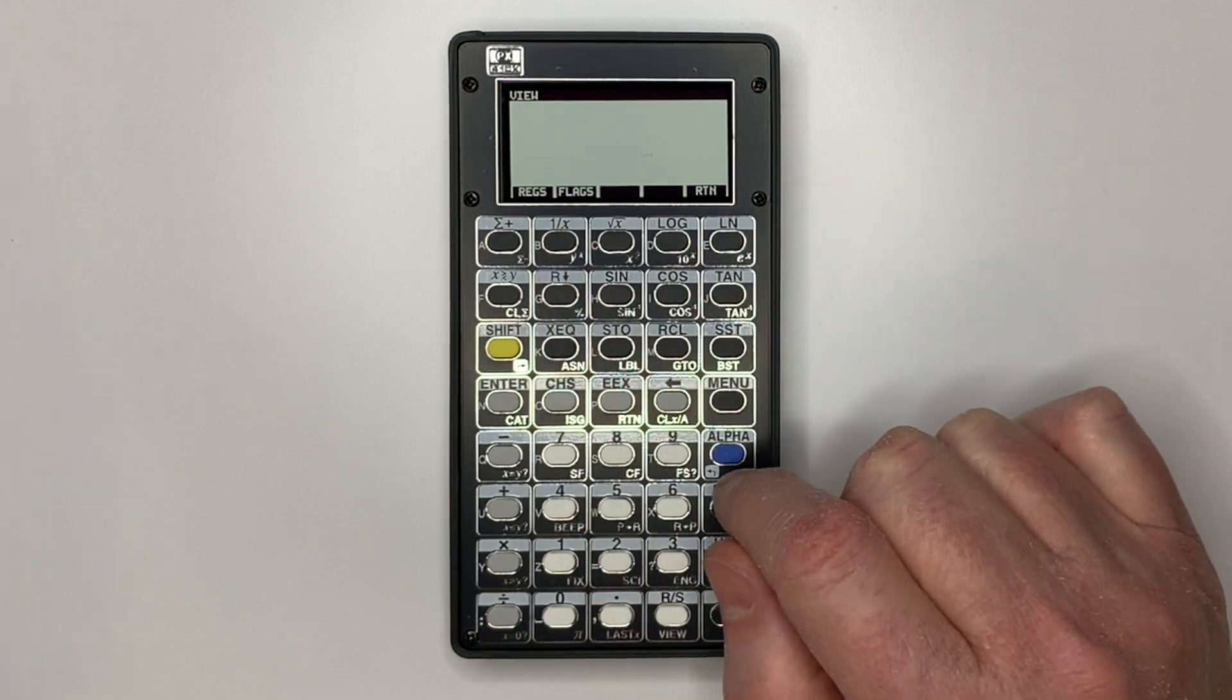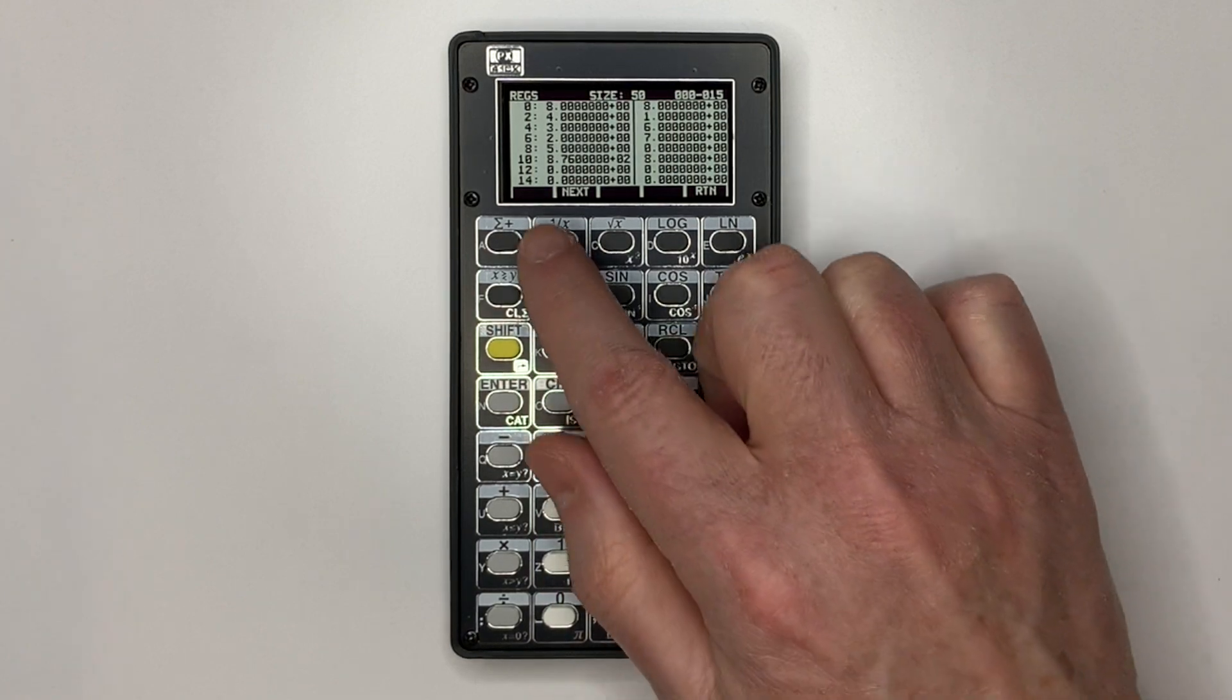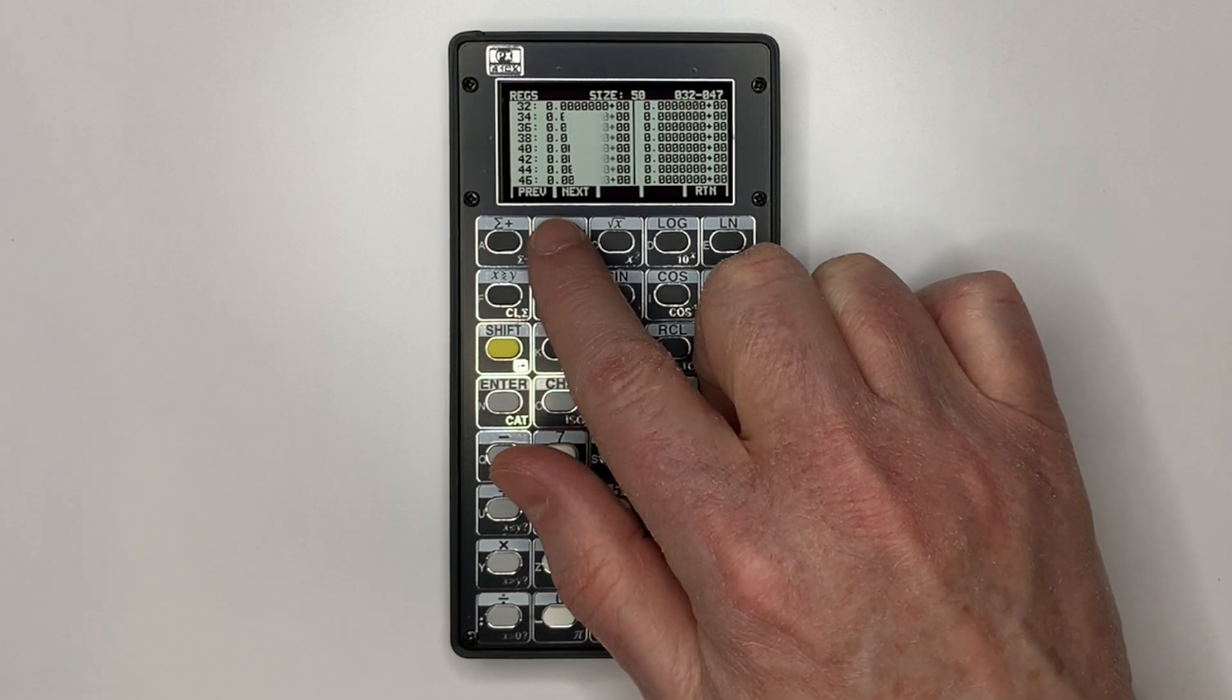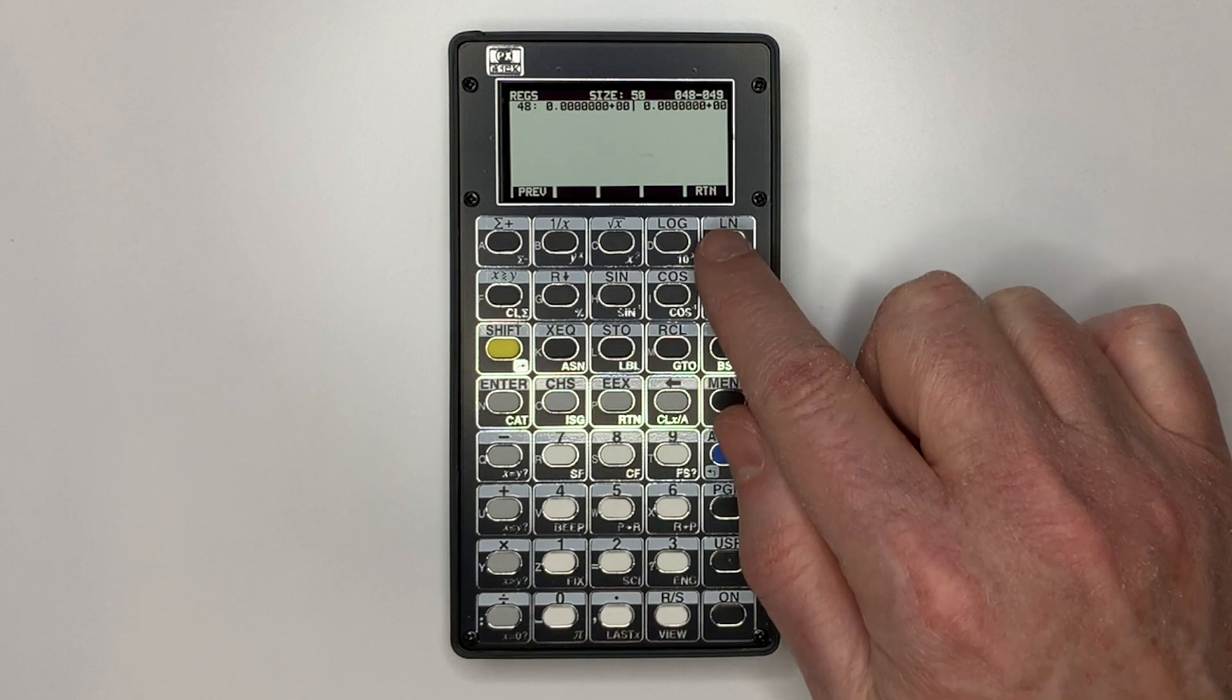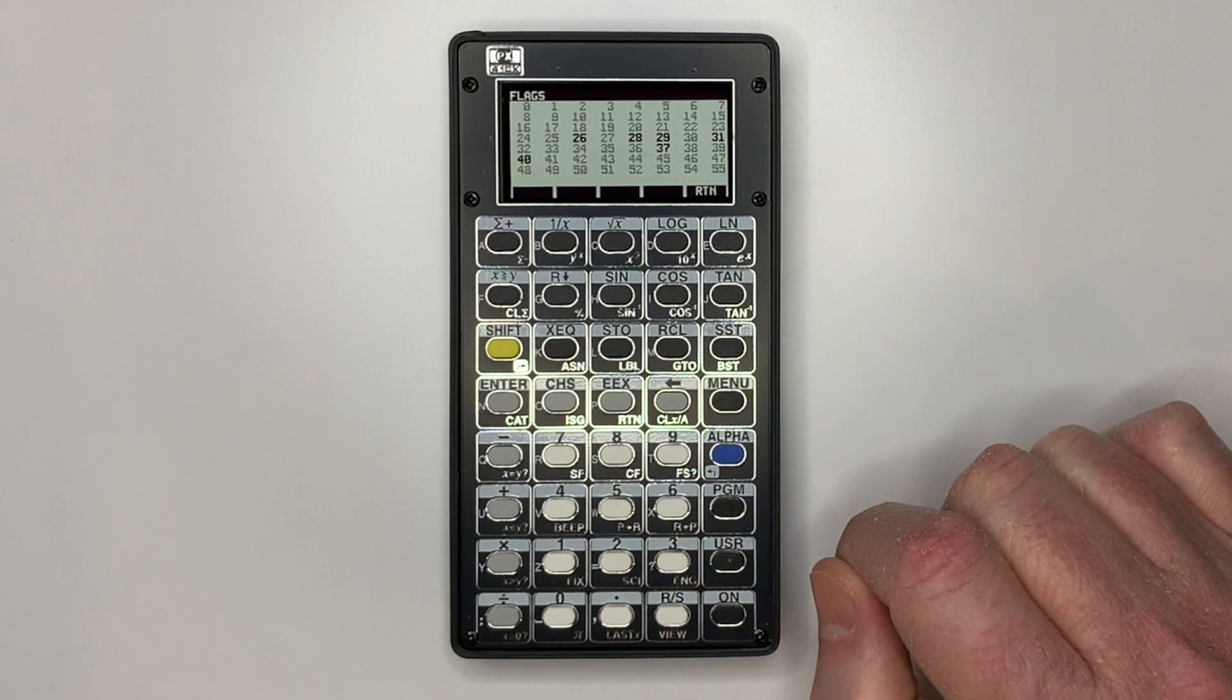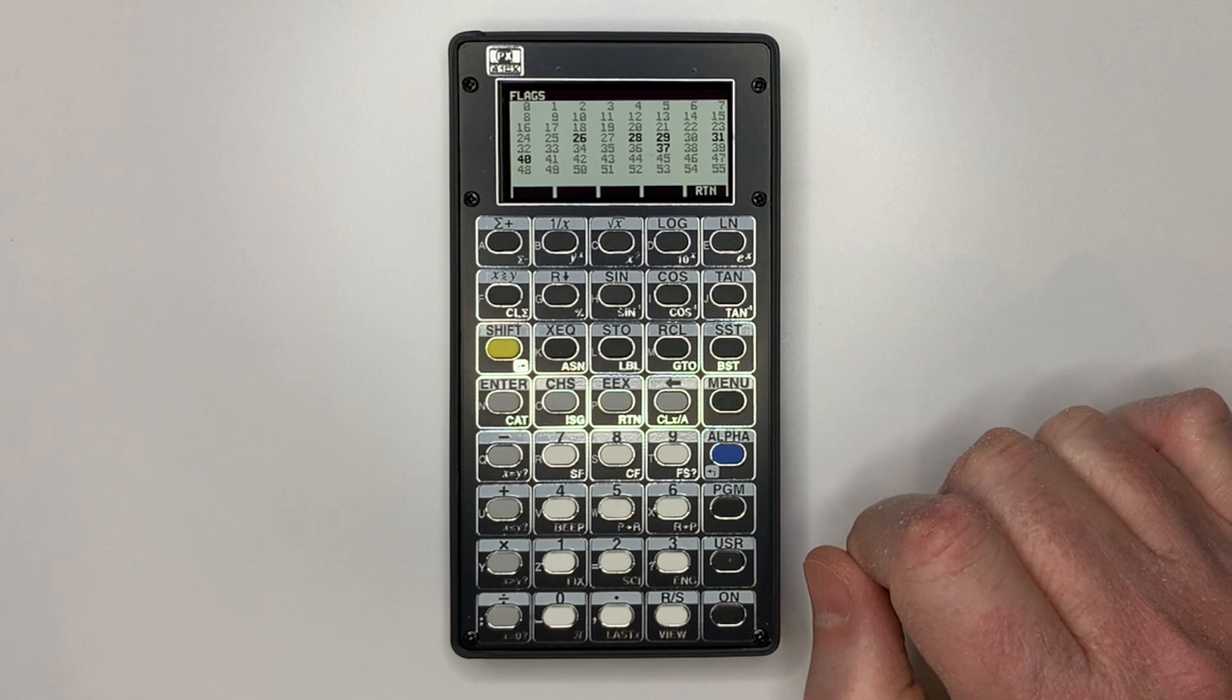The view option lets you see the registers easily and scroll through them all. Flags gives you a list of all the flags and the bold ones are set.